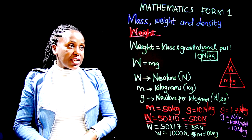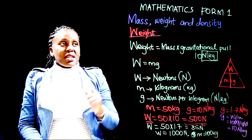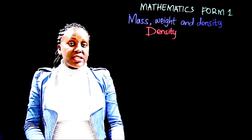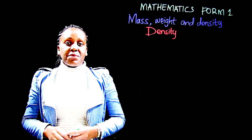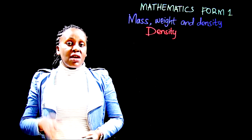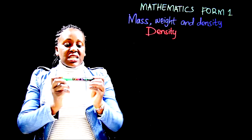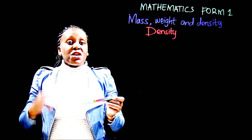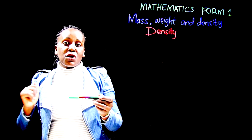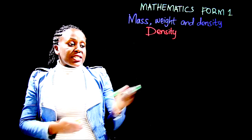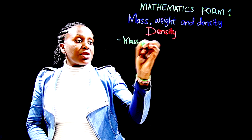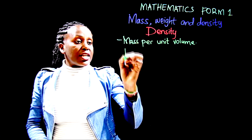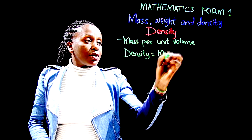Now we look at density. Density is related to mass because without the mass of a substance we cannot determine its density. When we talk about density, we are talking about the ratio between the mass of a substance to its volume. This marker pen occupies its own space — that is its volume. Divide the mass of the marker pen by its volume and you obtain its density. We define density as mass per unit volume.